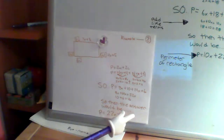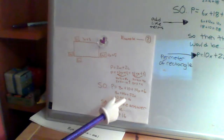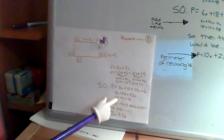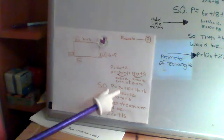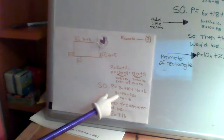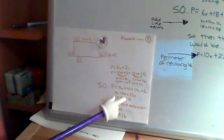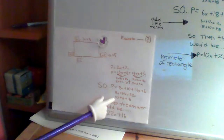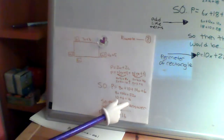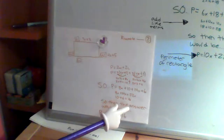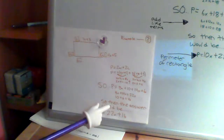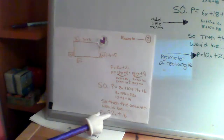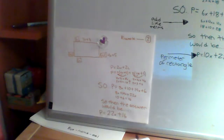Then you'd have to simplify that the same way you did in the last example. So you'd add the like terms, which is 8X plus 14X equals 22X. And then 10 plus 6 equals 16. So your answer would be P equals 22X plus 16.